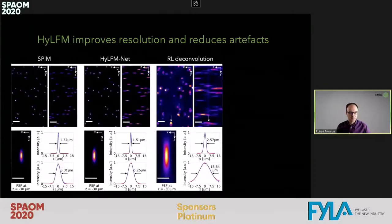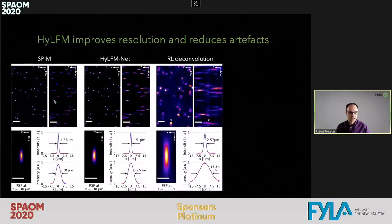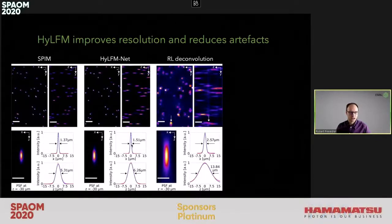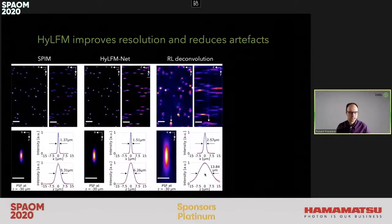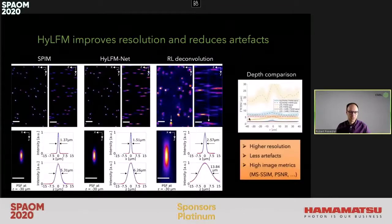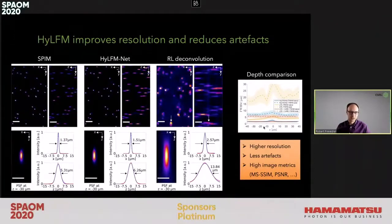One of the nice byproducts of this scheme is that since the neural network — which we now named High LFM Net — learns the reconstruction from very high resolution SPIM data, the reconstructions also come out at higher resolution. Comparing the Richardson-Lucy deconvolution to our neural network, especially in the axial dimension, the resolution is much improved. When plotted over imaging depth, the resolution is improved, more homogeneous, and does not vary as much as it typically does.